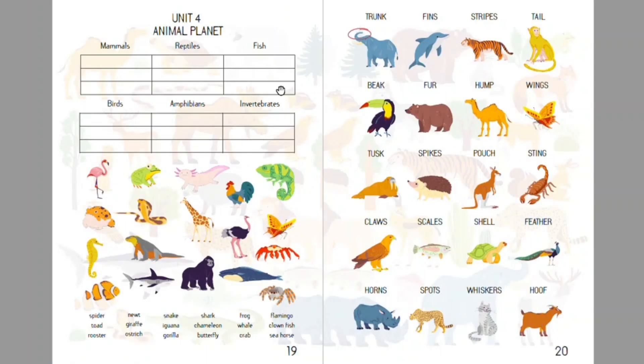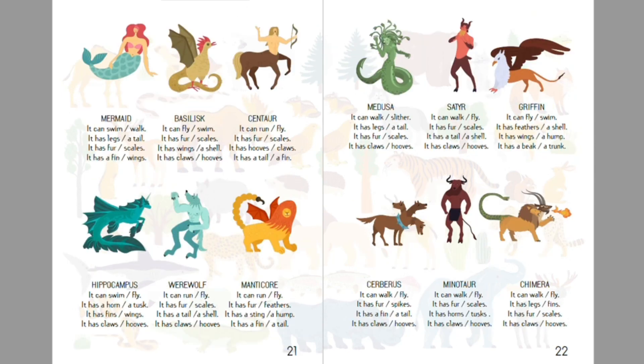Hi, welcome back to our Visual English Conversation theme. Today we are going to talk about all things animals, from real life creatures up to mythical ones. It's a great lesson for animal lovers and for all age groups, so this will be a very engaging lesson for you to have with your students.